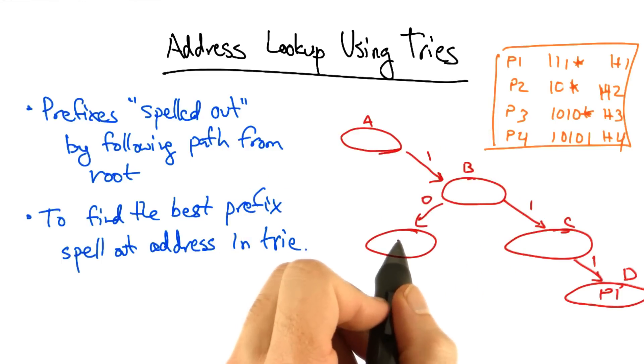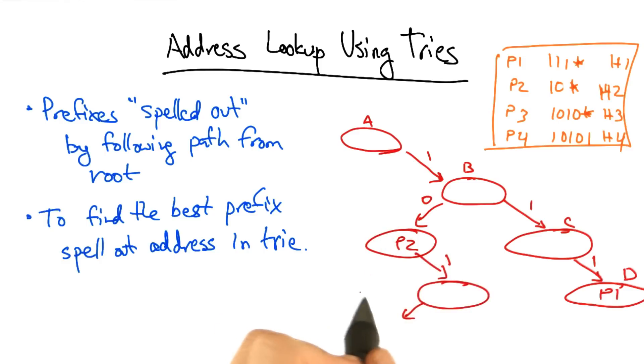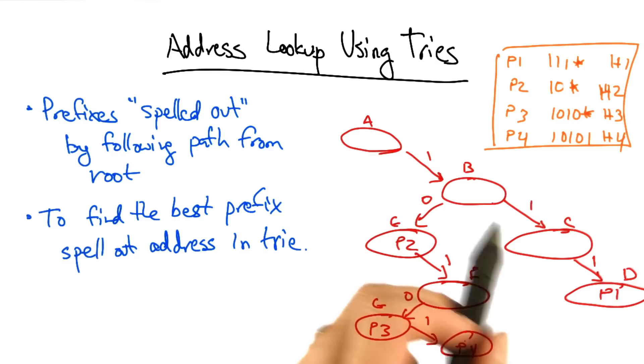1 0 star results in P2. 1 0 1 0 results in P3. And 1 0 1 0 1 results in P4. If we want to insert 1 1 1 0, insertion is easy. We can simply insert P5 as such.